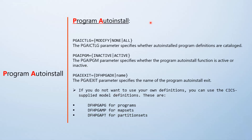IBM provides a program auto install feature where you do not have to define the resource manually — CICS will auto install it for you. To set up this feature, you need to enable a few SIT parameters. The SIT parameter PGAUTOINSTALL controls program auto install — you can set it to inactive or active. When set to active, the feature is enabled. The user-replaceable module responsible for this feature is specified in another SIT parameter called PGAUTOEXIT, and the default is DFHPGADX.